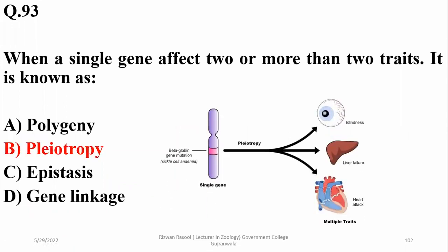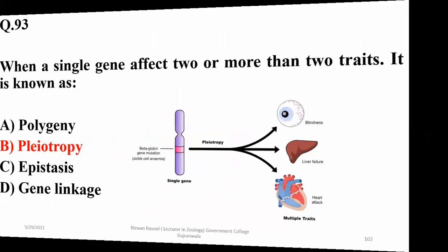For example, a single gene — the beta-globin gene mutation — which leads to sickle cell anemia can affect the eyes, liver, and heart as well. Right option is beta.